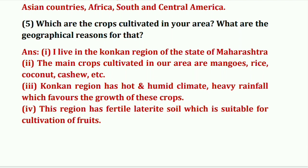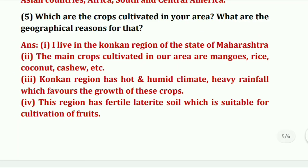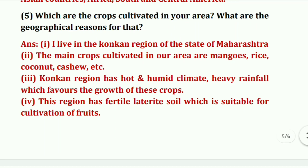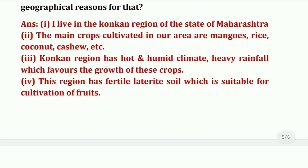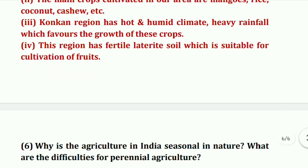Question five: which crops are cultivated in your area and what are the geographical reasons for that? I live in the coconut region of the state of Maharashtra. The main crops cultivated in our area are mangoes, rice, coconut, cashew, etc. This coconut region has a hot and humid climate with heavy rainfall which favors the growth of these crops, and the region has fertile laterite soil which is suitable for cultivation of fruits.